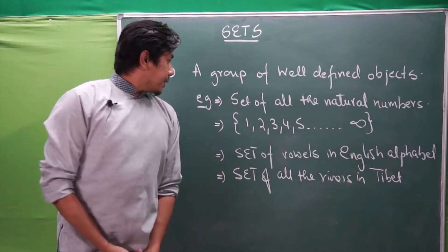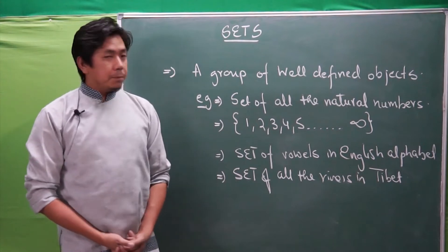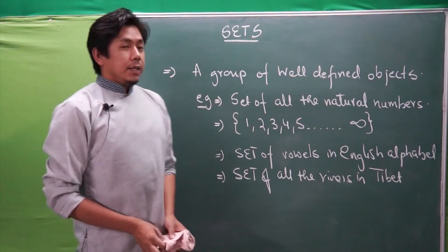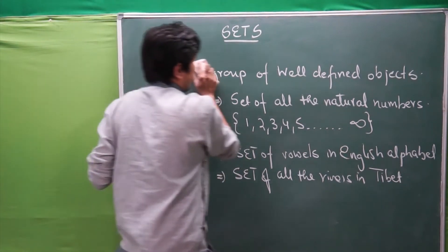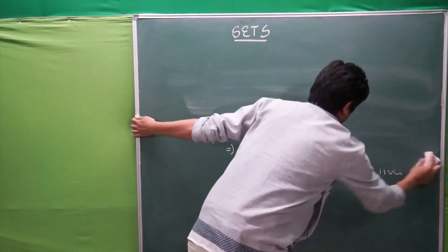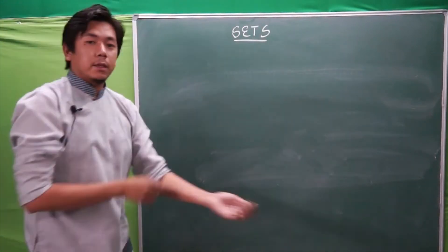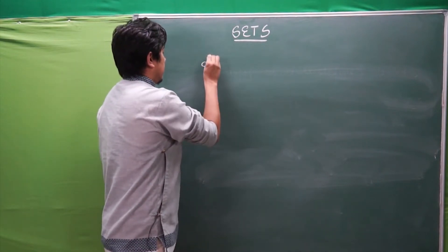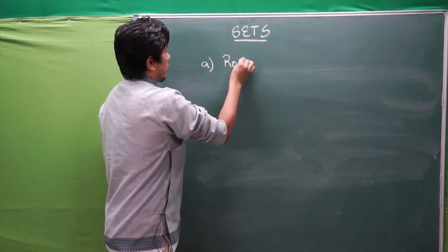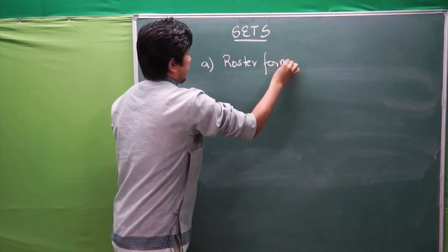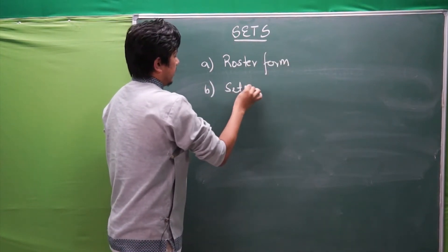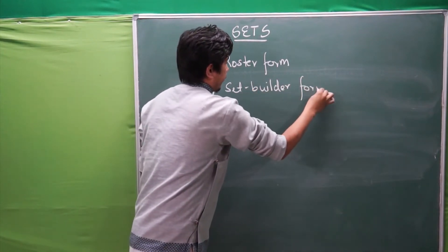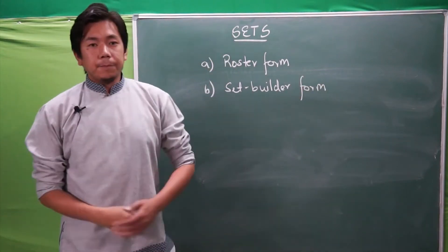Now, we know what a set is. How do we represent a set? Basically stating, there are usually two ways of representing a set. A set can be represented in the form of a roster form and a set builder form.